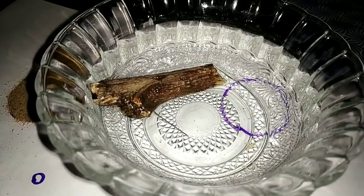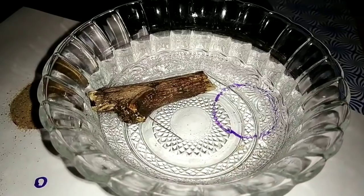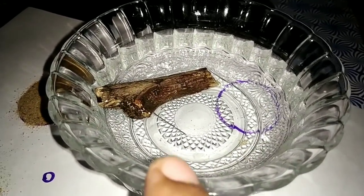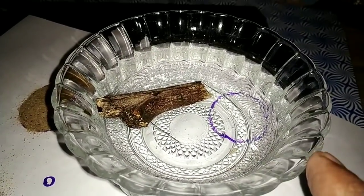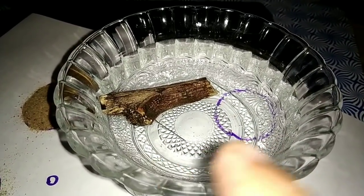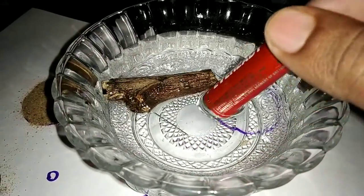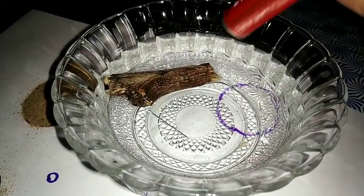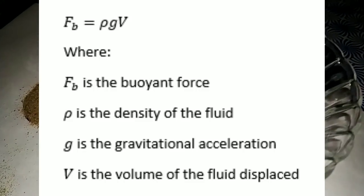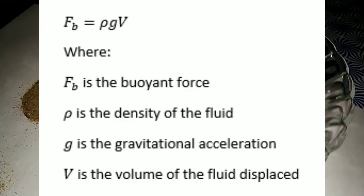There is a physics formula for buoyancy force. The buoyancy force is an upward force. The formula involves density — rho is the density of the liquid. Then we have gravity, g. Next we have volume displaced in the fluid, V. So the formula is: Fb equals rho times g times V. Rho is density, g is gravity, V is volume displaced in fluid. So Fb is the buoyancy force.